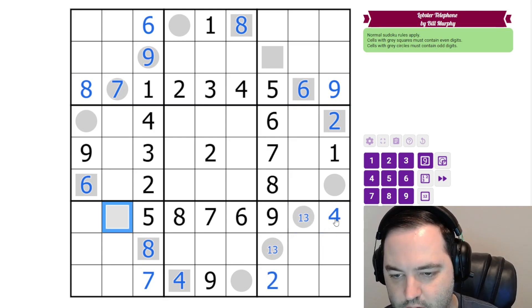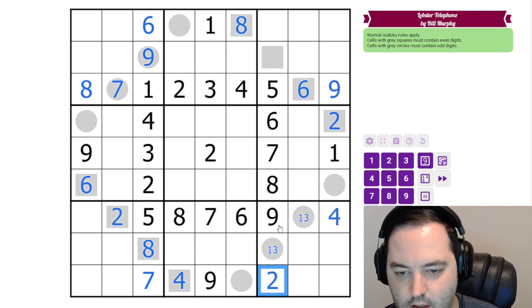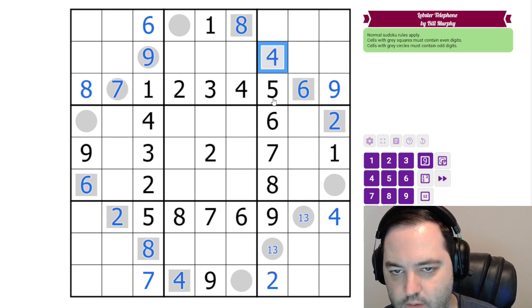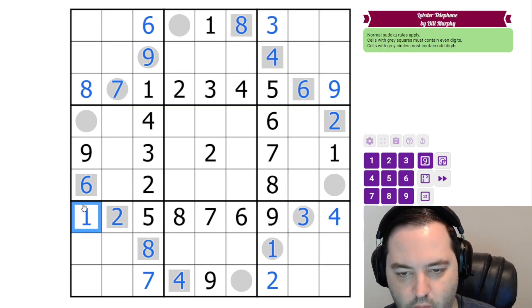And then this even digit can't be four, six, eight, so it's two. And here we have two, six, and eight, so this is four. And here we need one and three, but we have a one. So three, one, three, and one.